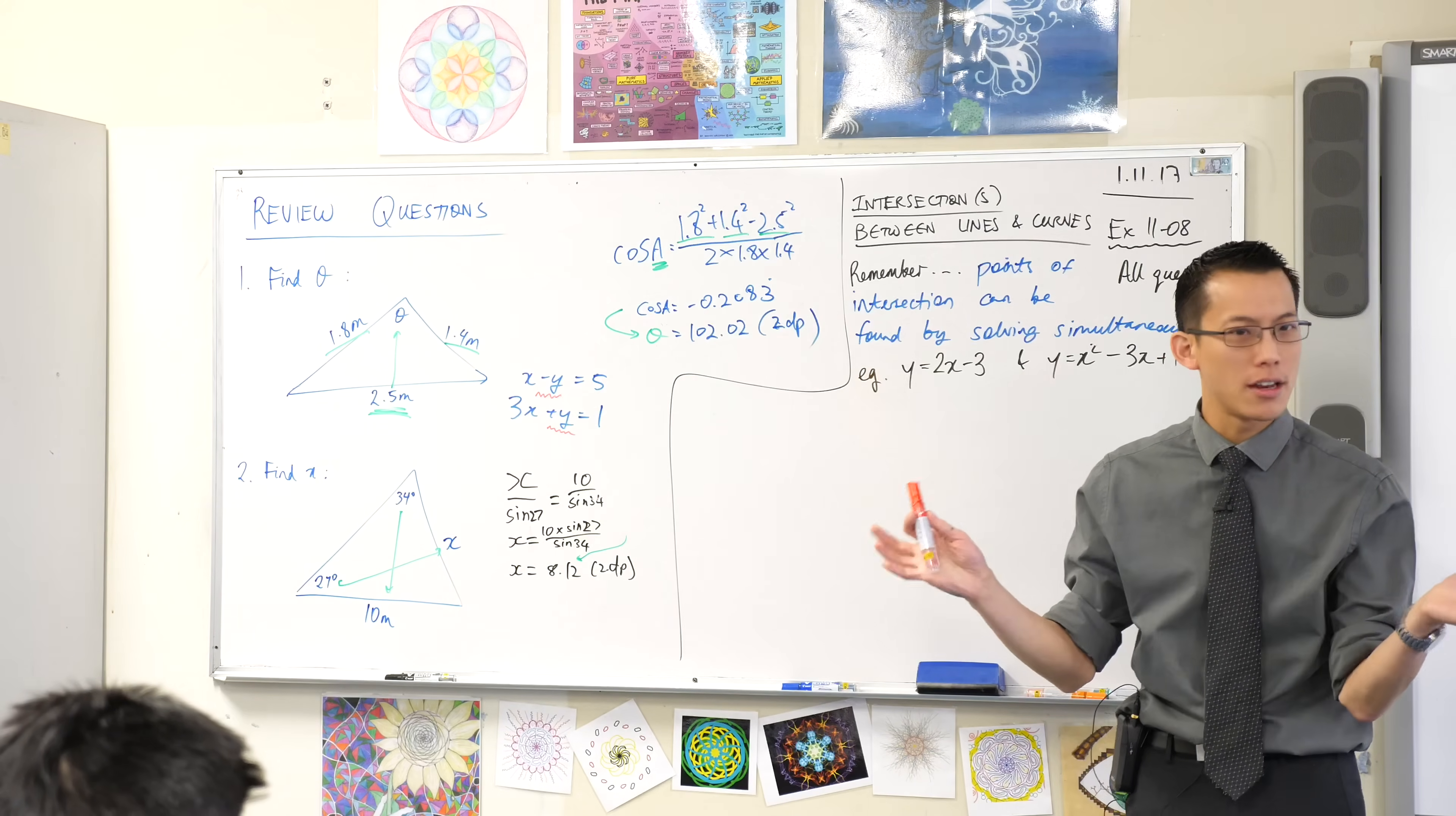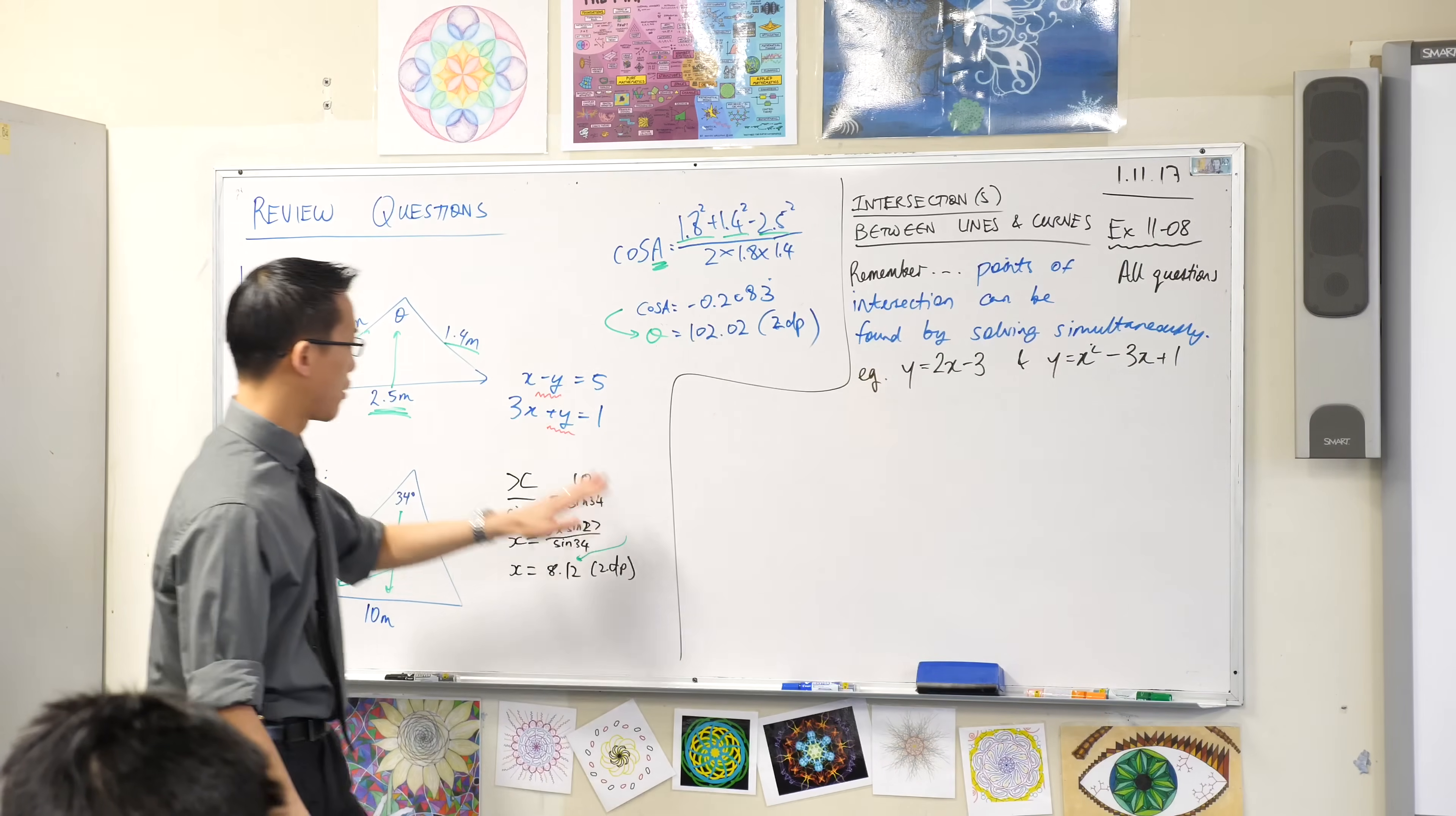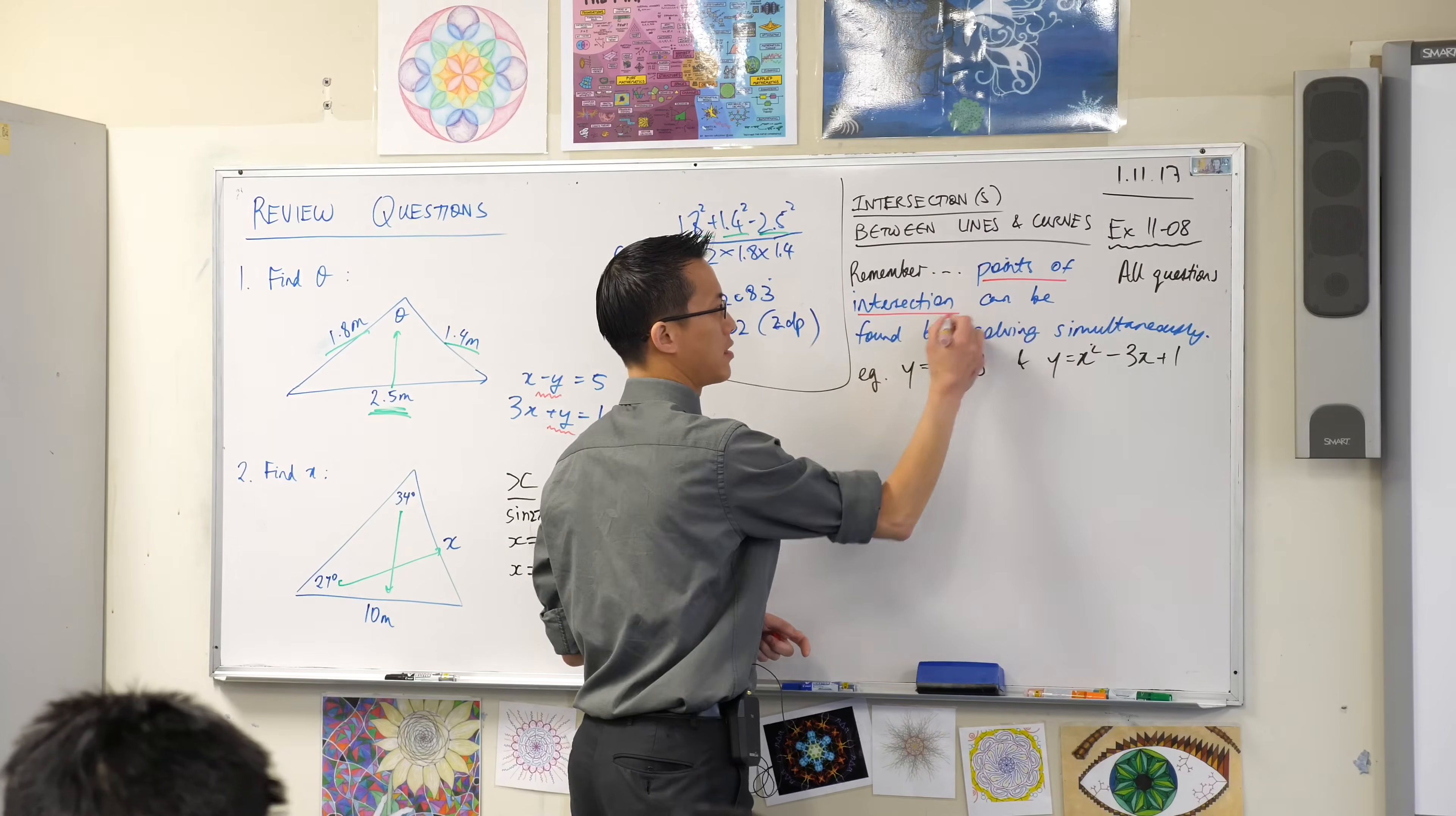That's just one method among many. But my point is once you do that, once you solve simultaneously, you'll get an x value, you'll get a y value and what those values represent is the points of intersection.